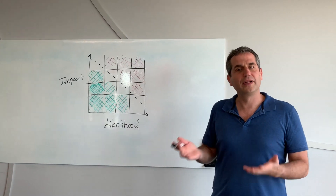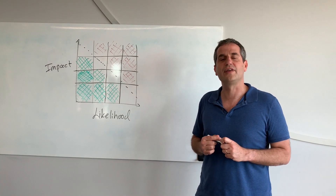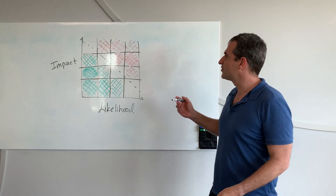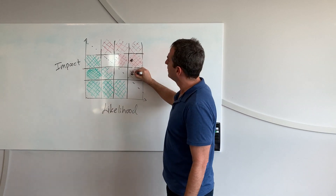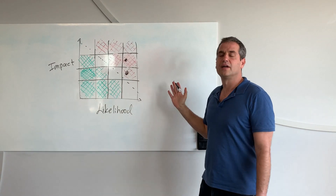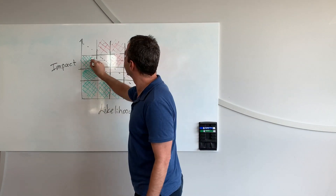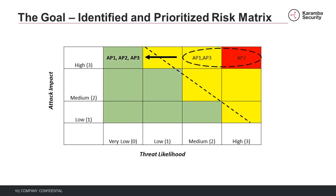Now we can complete the process with a list of mitigations and how they reduce the risk levels of the entire system. Assuming we have two threats in the red area, choosing the right mitigations can reduce the risk levels and bring them into the green. For the TARA process, we only use the requirement and design documents. The process usually takes around two weeks.